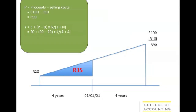So B is still R20, but P is now R90. So we're saying R20 plus half of the gain of R70 equals a valuation date value of R55.